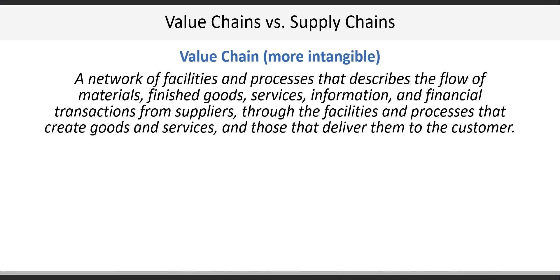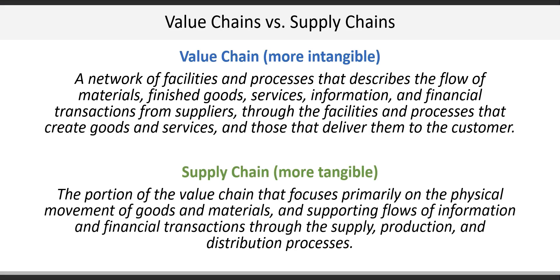Next, we explore the difference between value chains and supply chains. The value chain is a bit more intangible and captures the network of facilities and processes that describe the flow of all the materials and finished goods — basically everything from the supplier through the operation and to the customer. The supply chain, on the other hand, is a bit more tangible and actually forms part of the value chain itself. The supply chain focuses on the physical movement of goods and materials and the supporting flows of information and transactions through supply, production, and distribution.